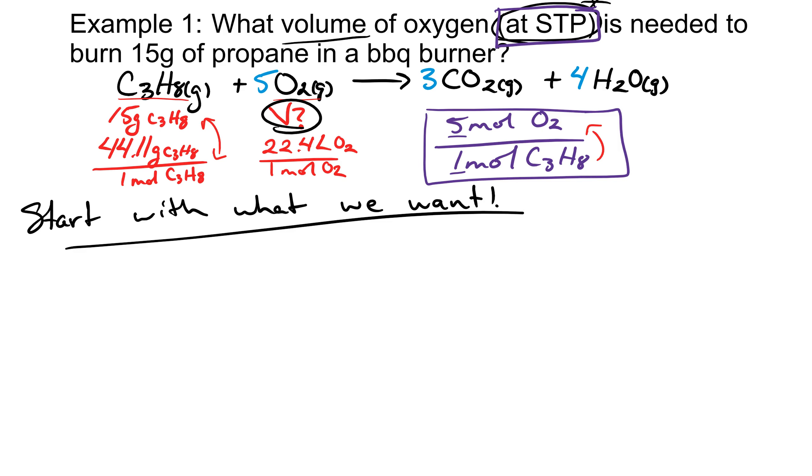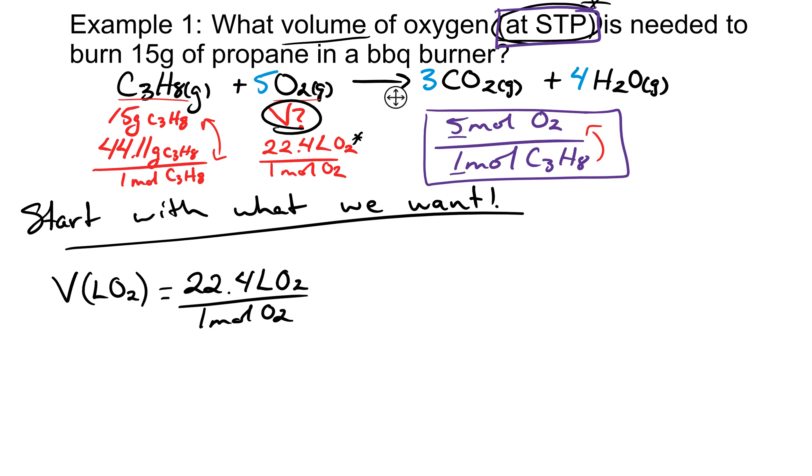So I'm looking for the volume in liters of oxygen. The only piece of information that I know that has volume of oxygen is our information about STP. So we're going to start out with that: 22.4 liters of oxygen for every one mole of oxygen. So I have the unit that I want. All I have to do is cancel out moles of oxygen and then cancel out anything else, any other unit that shows up. If I want to cancel out moles of oxygen on the bottom, I have to have moles of oxygen on the top. So I'm going to use my molar ratio: five moles of oxygen will react with one mole of C3H8. So moles of oxygen will cancel out.